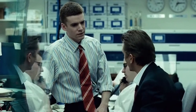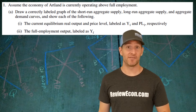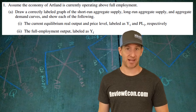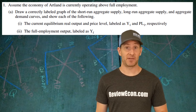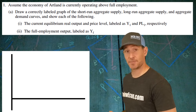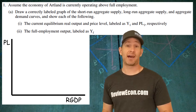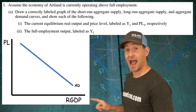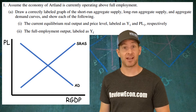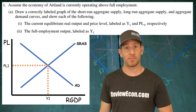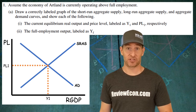This question is all about Artland. Artland is currently operating above their full employment output. That means they have an inflationary gap. We're going to start off by drawing an ASAD model for this economy. To do that, first label your axes. You have real GDP on the x-axis, price level on the y-axis. You have a downward sloping aggregate demand curve, an upward sloping short-run aggregate supply curve. Then mark the current equilibrium output and price level, Y1 and PL1 as the question indicates you should.